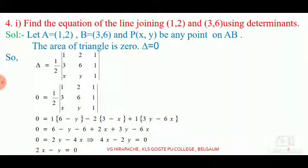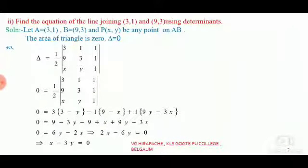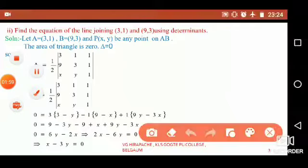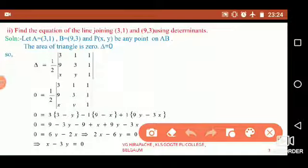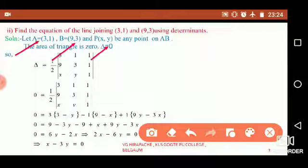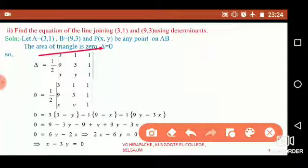Let me now do one more example: find the equation of a line joining the two points (3, 1) and (9, 3) using determinants. Let A equal to (3, 1), B equal to (9, 3), and P(x, y) be any point on the line AB. Since the given three points are collinear, they lie on a straight line, so the area of those three points is always equal to zero.